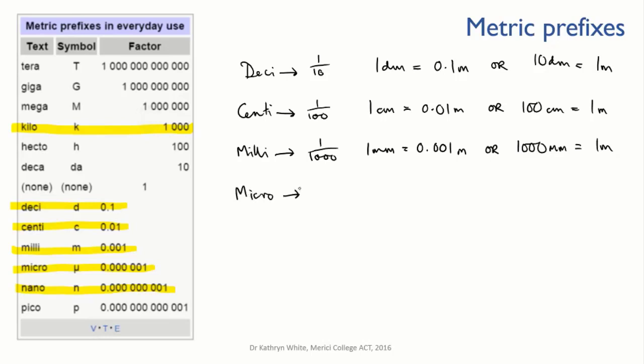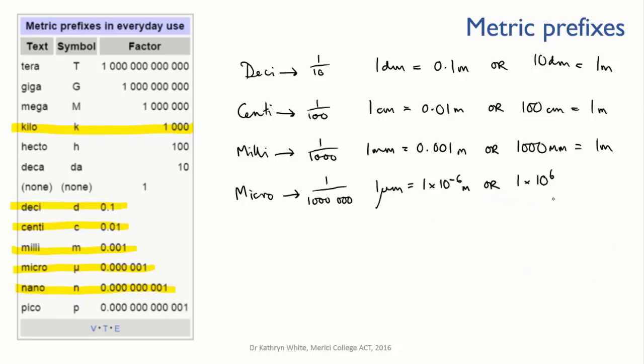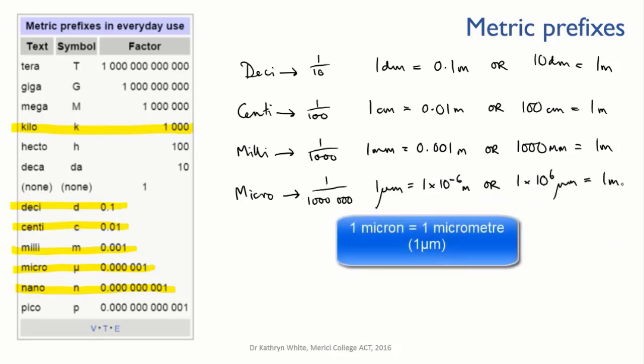Micro means a millionth. One micrometer equals 1 times 10 to the minus 6 meters. Or we can say that there are 1,000,000 micrometers in a meter. Micrometers are also sometimes called microns.